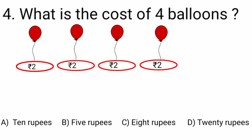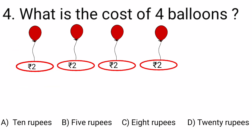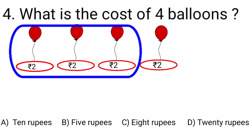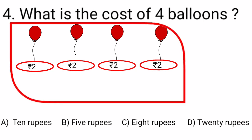What is the cost of 4 balloons? We can see we have 4 balloons here and the cost of 1 balloon is 2 rupees. The cost of 2 balloons will be 2 plus 2, that is 4 rupees. The cost of 3 balloons is 4 plus 2, that is 6 rupees. And the cost of 4 balloons is 6 plus 2, that is 8 rupees. Option A is 10 rupees, option B is 5 rupees, option C is 8 rupees, and option D is 20 rupees. Option C, 8 rupees, is the correct option and we put a tick mark at option C.